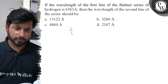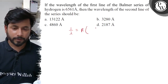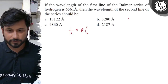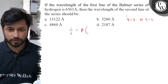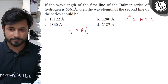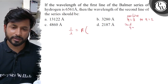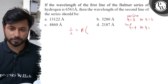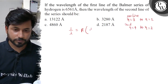The formula is 1 by lambda equals to R times the bracket. The first line of the Balmer series corresponds to n equals 3 to n equals 2. The second line corresponds to n equals 4 to n equals 2. Here we have the formula: 1 by lambda equals to 1 by n_final squared minus 1 by n_initial squared.